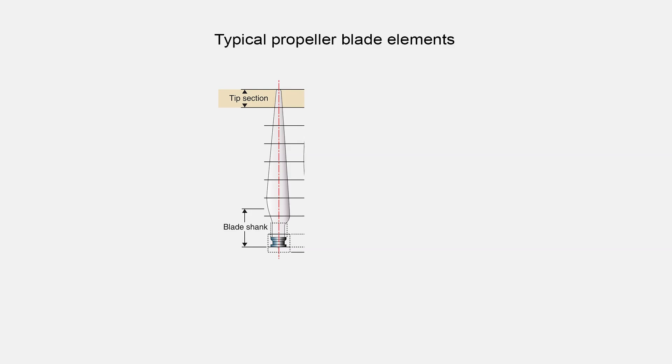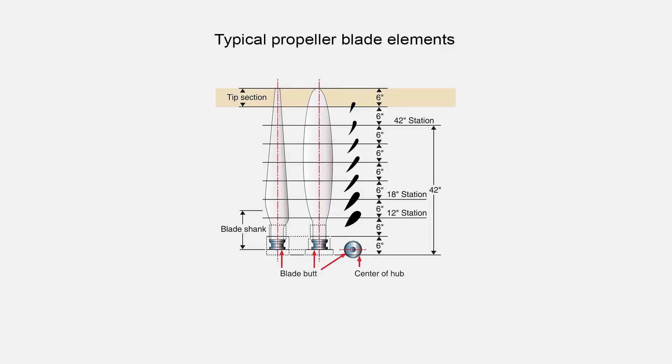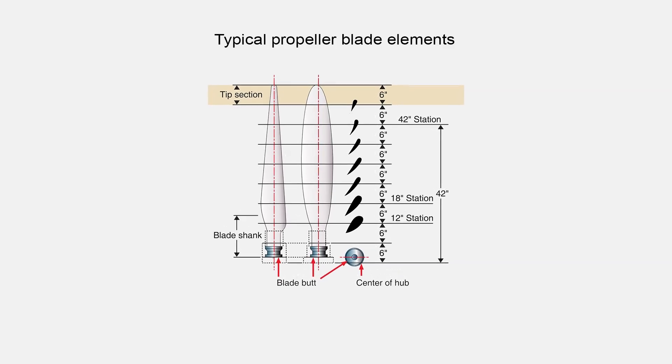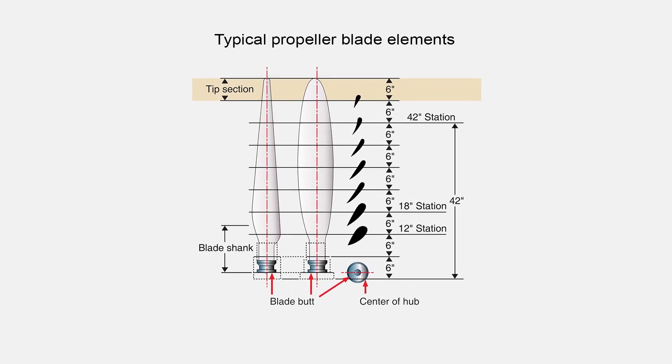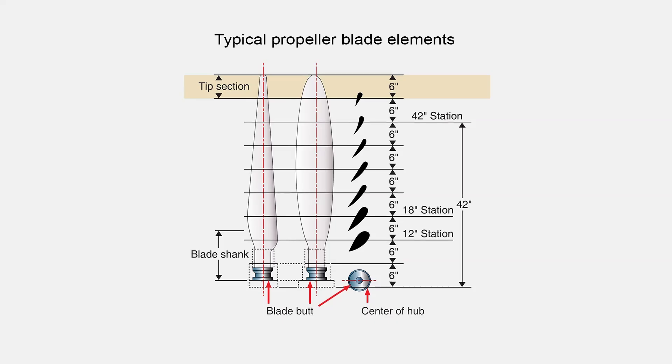In addition to blade twist, most propellers have a thicker, low-speed airfoil near the blade hub and a thinner, high-speed airfoil near the tip. This, along with blade twist, enables the propeller to produce a relatively constant amount of thrust along the entire length of a propeller blade.